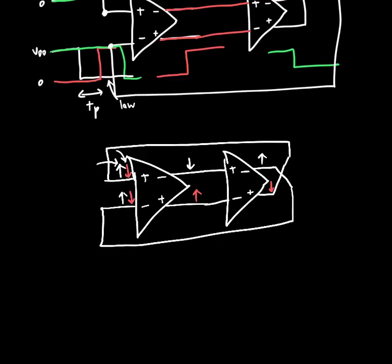And so the propagation or the total period of this guy is just four times the total propagation delay because we've only got two inverters here. So this can provide some speed advantages over the three-inverter ring oscillator.